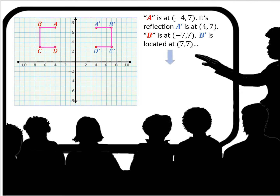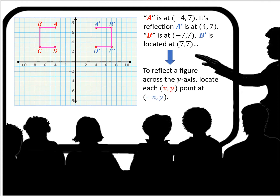Looking at the reflection across the y-axis, the original point A is at negative 4, 7, and its reflection is at 4, 7. Point B's original location is negative 7, 7, and its reflection is at 7, 7. So to reflect a figure across the y-axis, you locate each (x, y) point at the negative x, y point. We took the negative of the original x-coordinate value, which was negative 4 — negative negative 4 is positive 4 — and we leave the y-coordinate the same at 7. We do that with each of the original points A, B, C, and D.